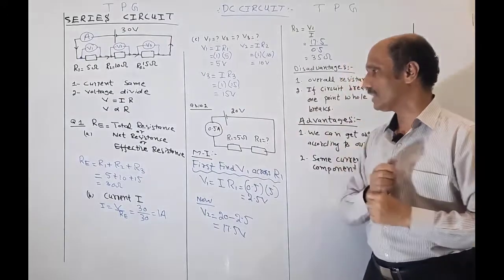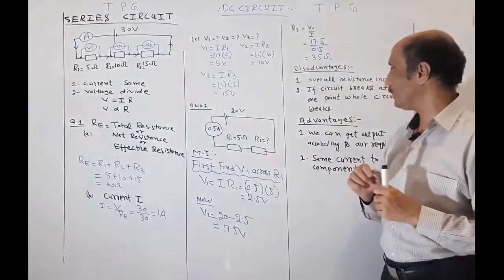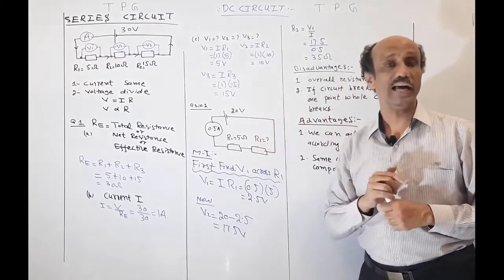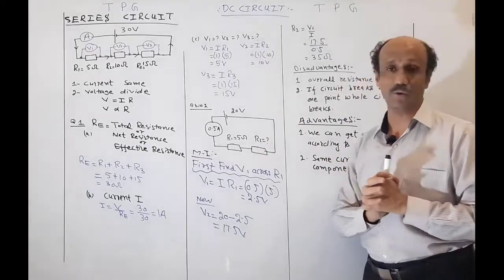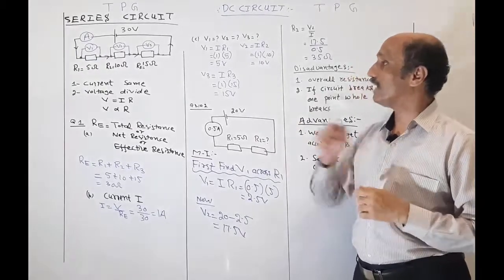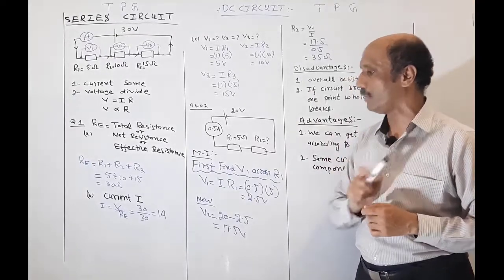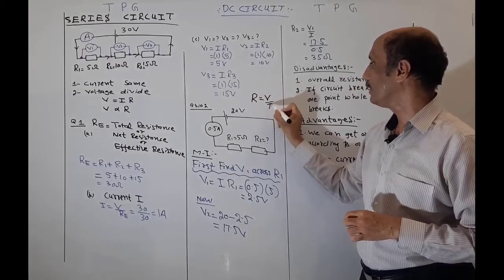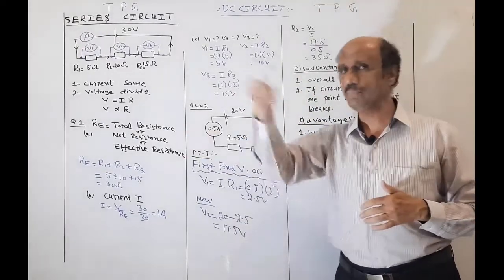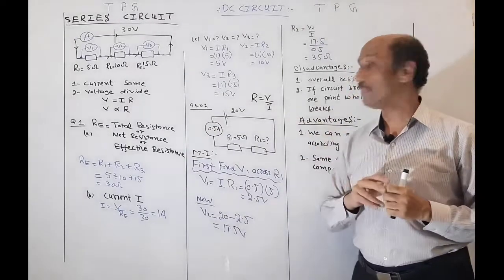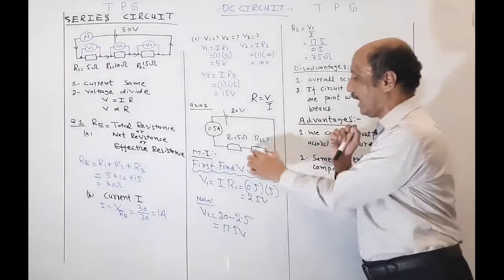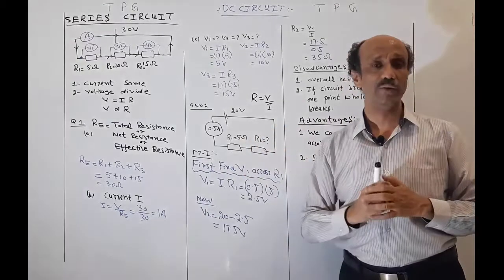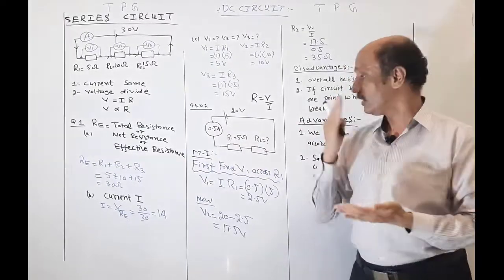In question number 2, the scenario is different — you need to find the unknown resistance R2. The ammeter reading is given as 0.5 ampere and R1 is 5 ohm. To find R2, we use Ohm's law: R = V / I. Since we don't have V2, we first calculate V1 = I × R1 = 0.5 × 5 = 2.5 volt.